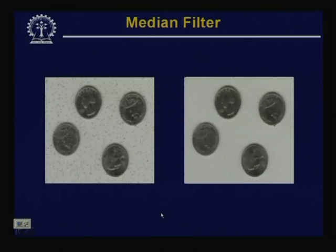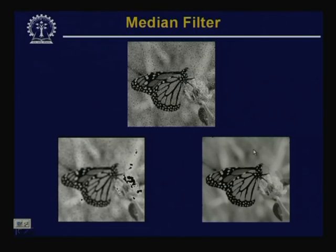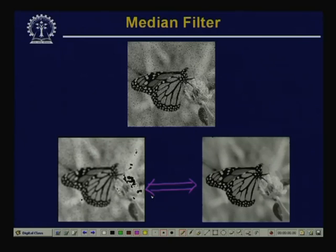To further demonstrate the advantage, a noisy butterfly image is shown. The bottom-left shows averaging over a 5×5 neighborhood, and the bottom-right shows median filtering. The result clearly shows the superiority of median filtering over smoothing/averaging, especially for salt-and-pepper noise — a random noise named for its appearance in the image.